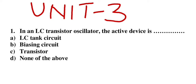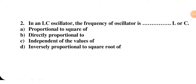Hello everyone. In this video lecture on analog circuits, I am going to discuss MCQs based on oscillators, which is in Unit 3 of analog circuits. The first question is: in an LC transistor oscillator, what is the active device — LC tank circuit, biasing circuit, transistor, or none of the above? The right option is transistor. Transistor is the active device, so option C is correct.